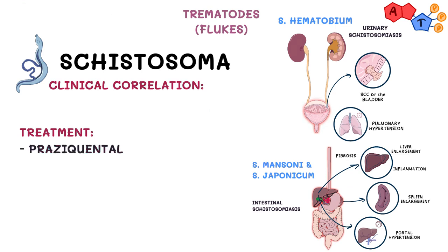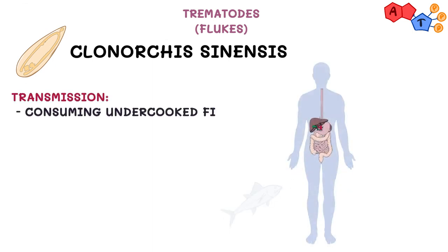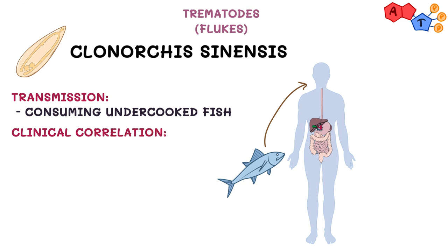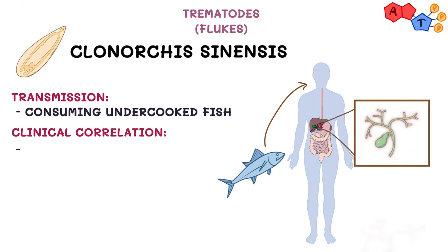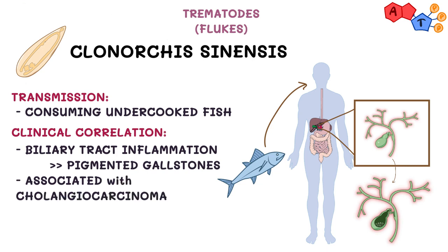The last worm we're going to talk about today is Clonorchis sinensis. It is transmitted by consuming undercooked fish, and once this happens, it can lead to biliary tract inflammation and consequently pigmented gallstones. It is also associated with cholangiocarcinoma, or cancer of the biliary tract. For treatment, we use praziquantel.